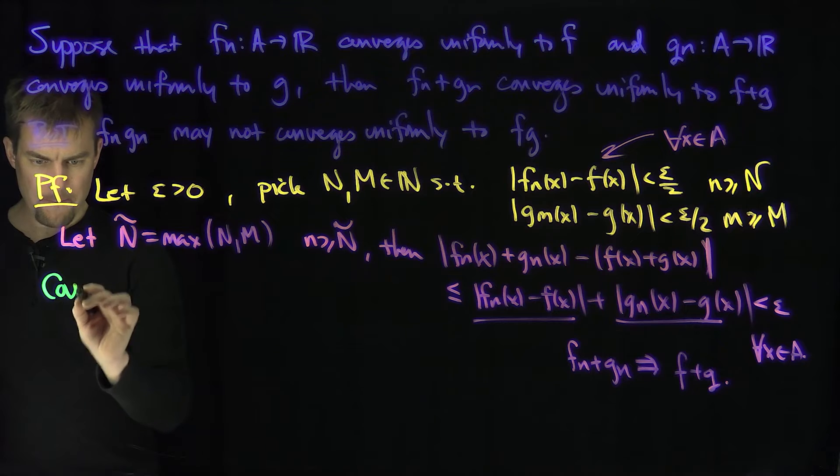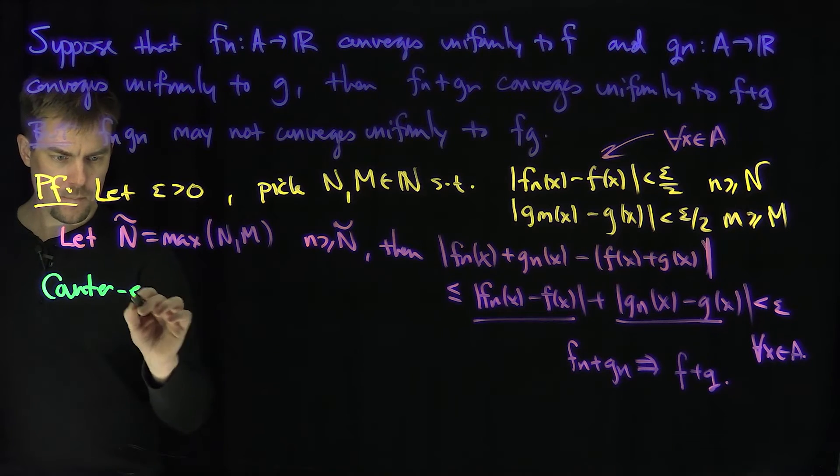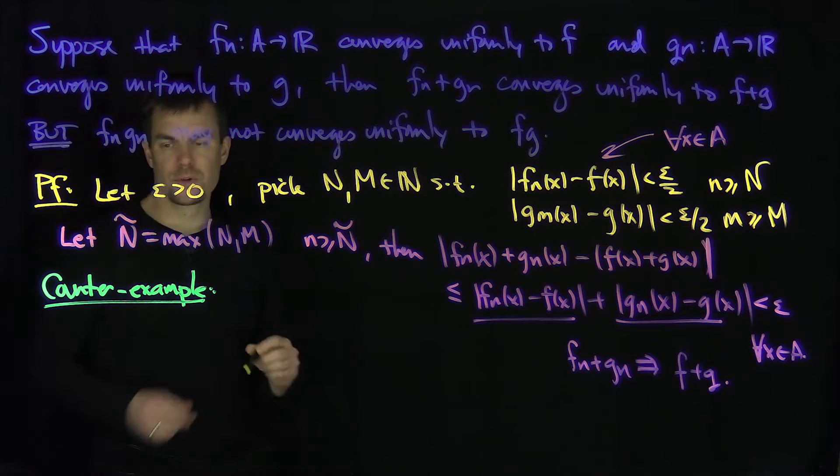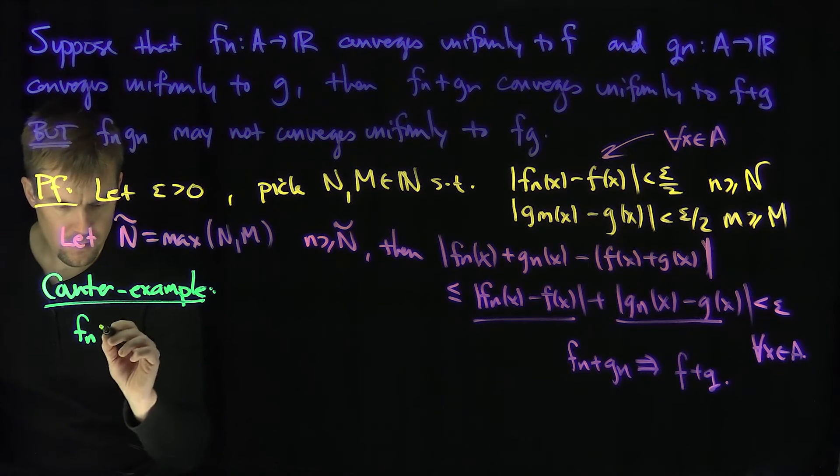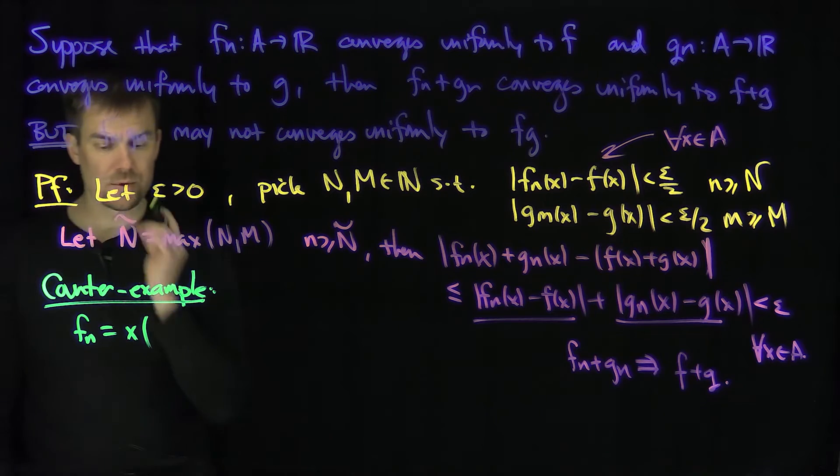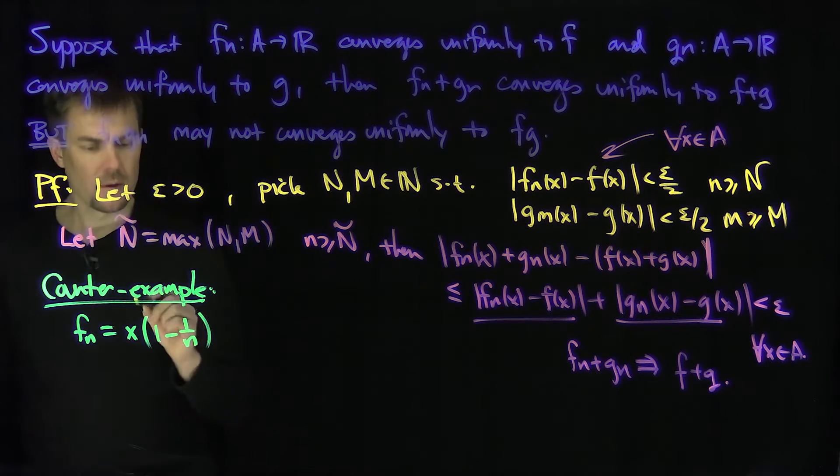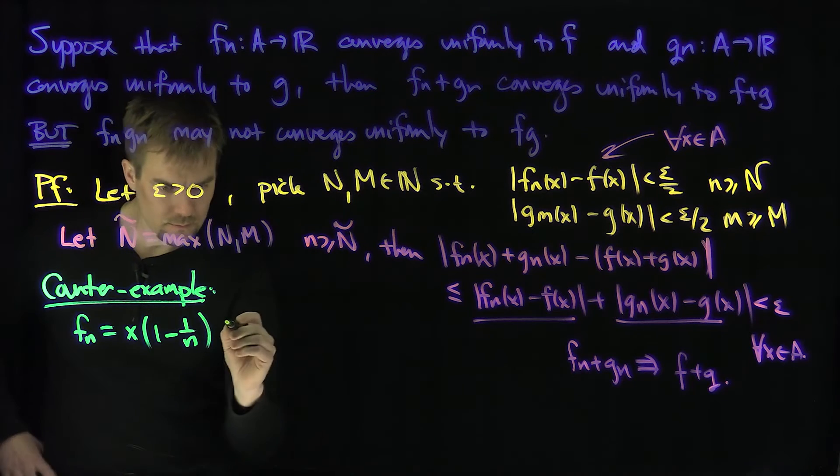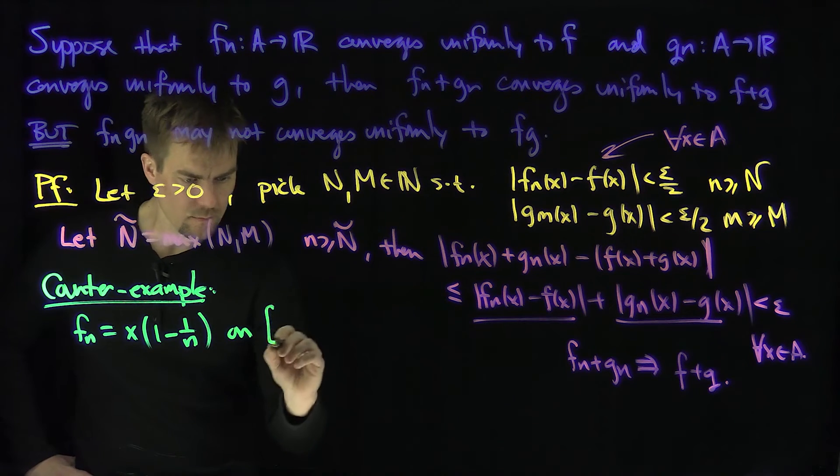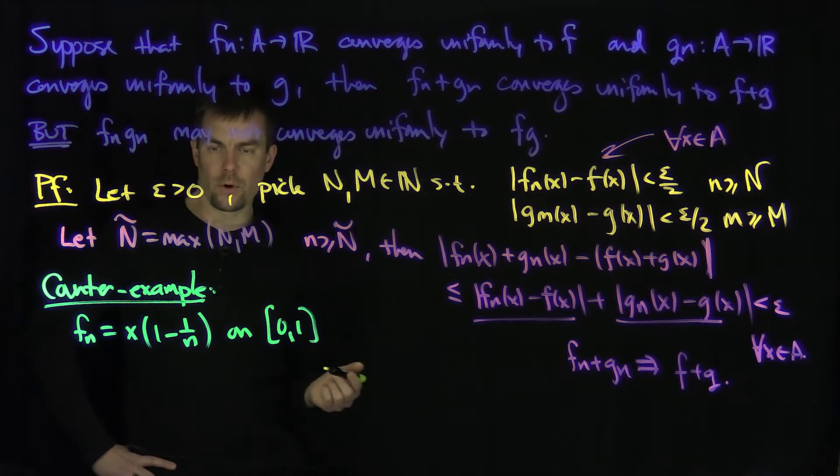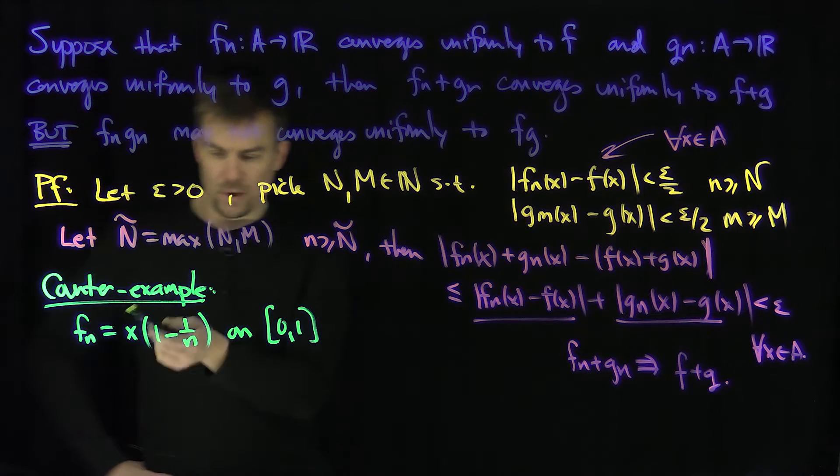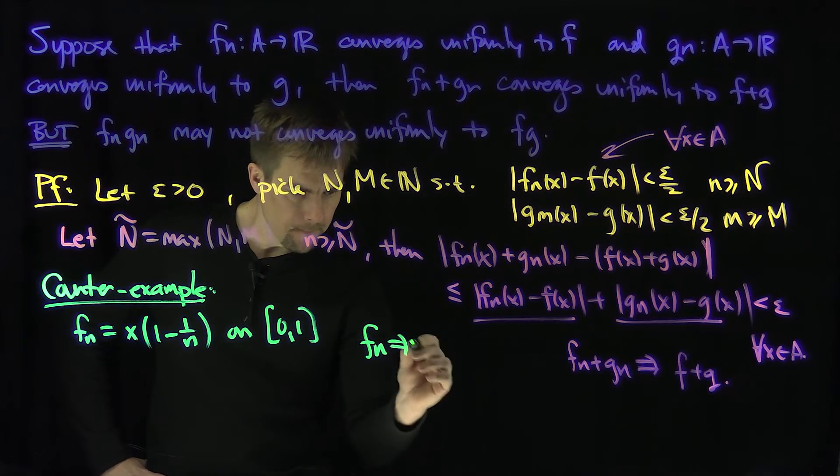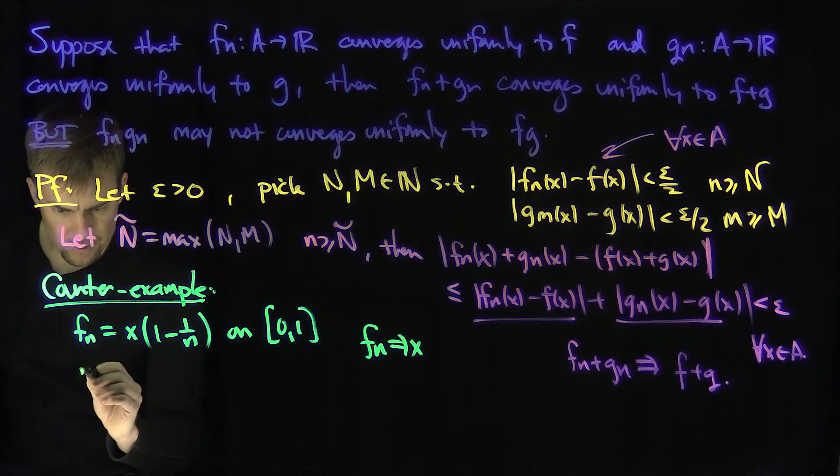I'm going to let Fn be x times (1 - 1/N) on the interval [0,1]. Then Fn converges uniformly to x.